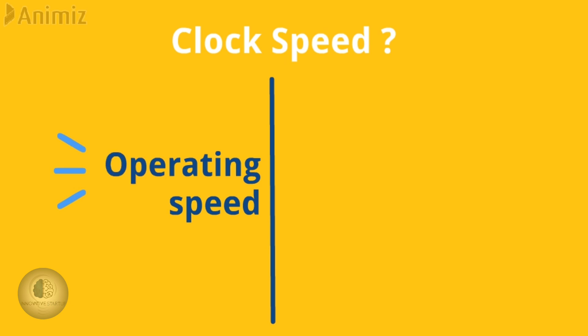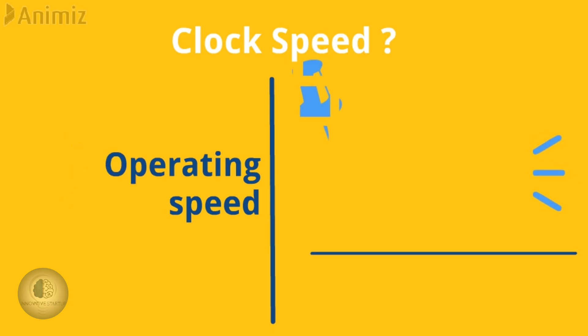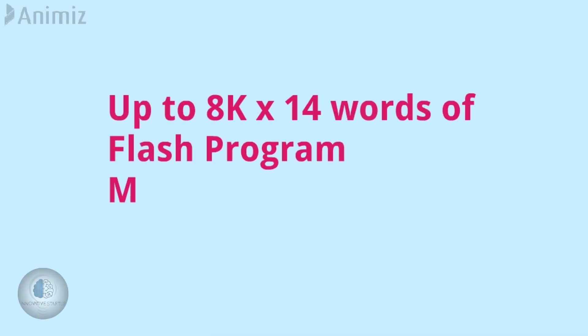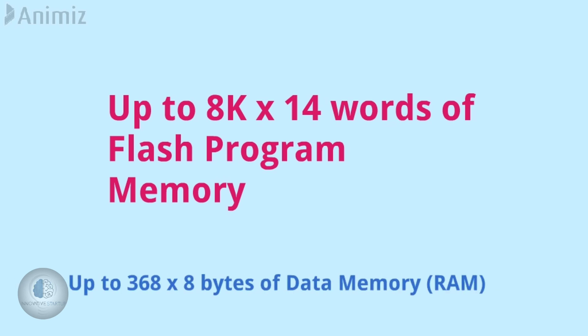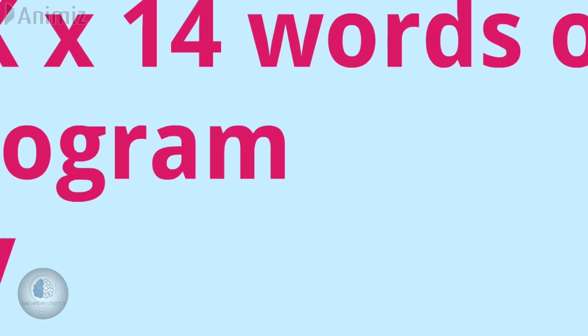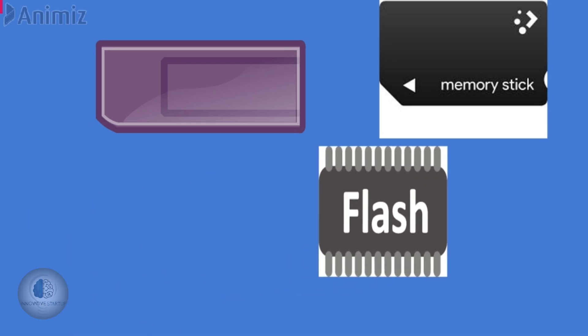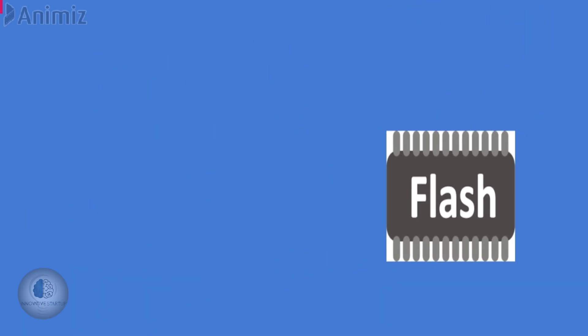We will review the PIC16F877A microcontroller. The operating speed is 20 MHz, so if you look at the instruction, it will start in 200 nanoseconds. There is 8KB of flash memory, and 368x8 bytes of RAM.